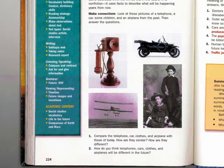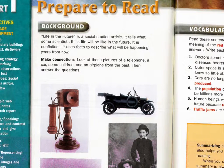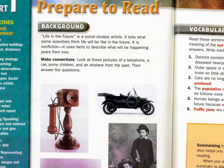Notice the academic content: social studies, life in the future, comparison of Earth and Mars. One thing I like about Shining Star is that you're learning about topics that are going to come up in other classes. We're trying to build your background knowledge and vocabulary, so please don't cheat — learn the material. 'Life in the Future' is a social studies article that tells what some scientists think life will be like in the future. It is nonfiction, which means it uses facts to describe what will be happening years from now.